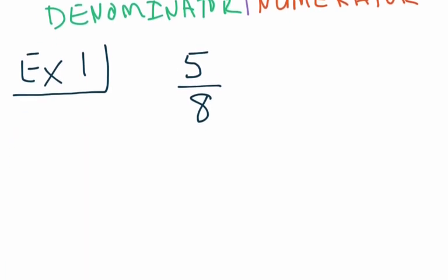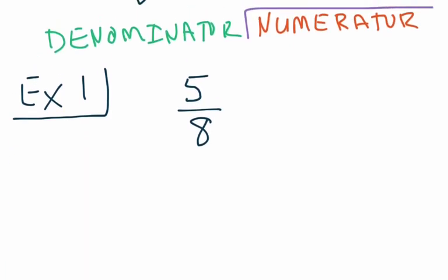So if we take a look at our first example, we start off with 5 over 8 as our first fraction that we're going to look at. And so as we see in green and orange, we're going to take the denominator, which is 8, and put that out front. And the numerator, which is 5, put that underneath.